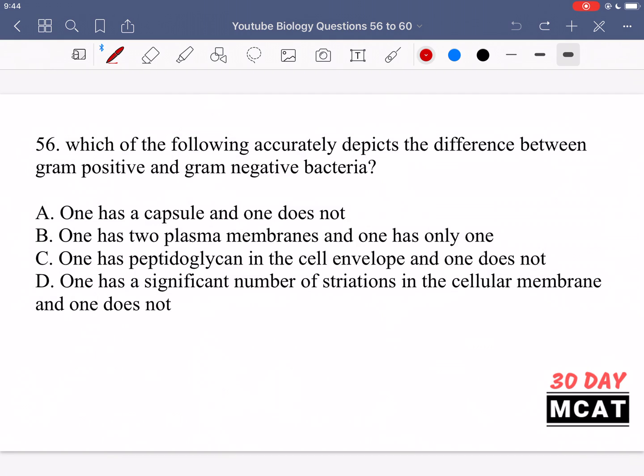Now let's go to the questions together. In question 56 we're asked which of the following accurately depicts the difference between gram-positive and gram-negative bacteria. The main difference is that gram-positive bacteria has a lot more peptidoglycan. Both have peptidoglycan in their cell wall, but gram-negative bacteria actually have two parts to their cell wall - an inner membrane and an outer membrane.